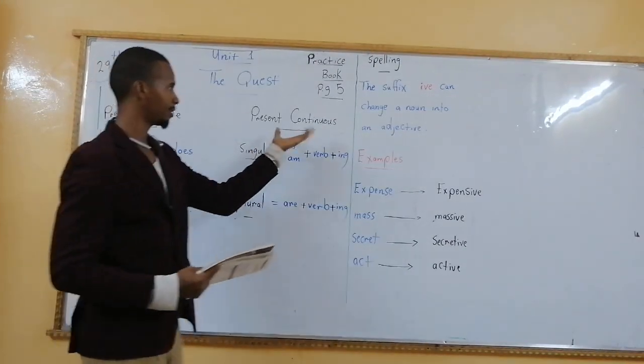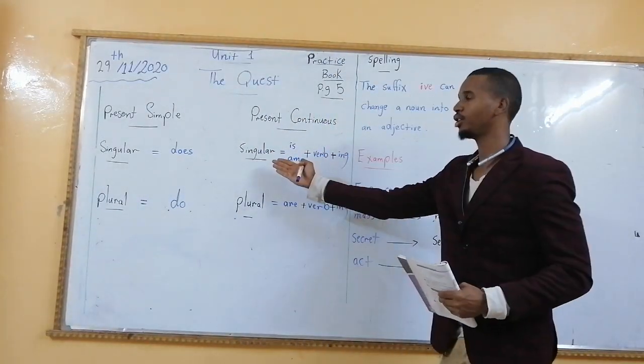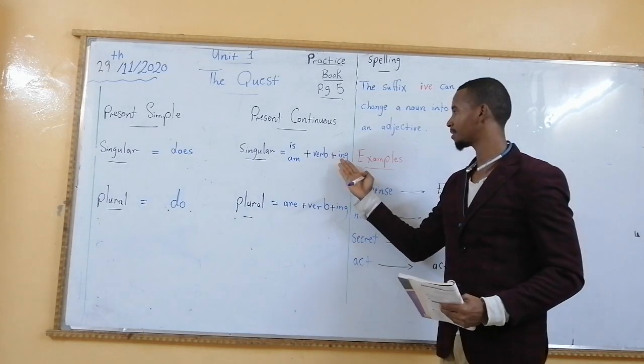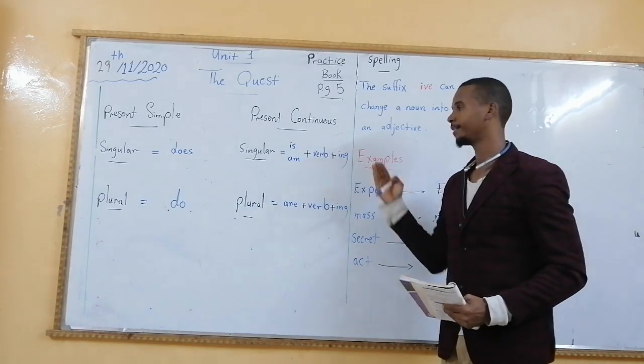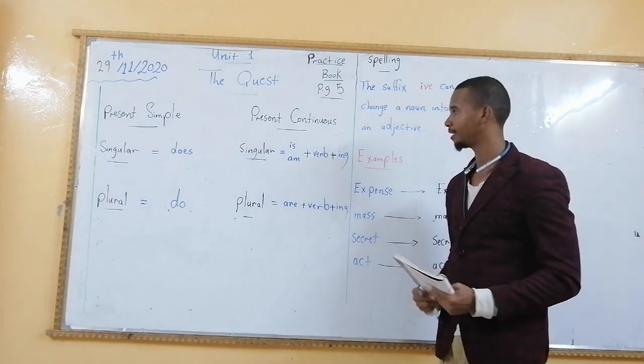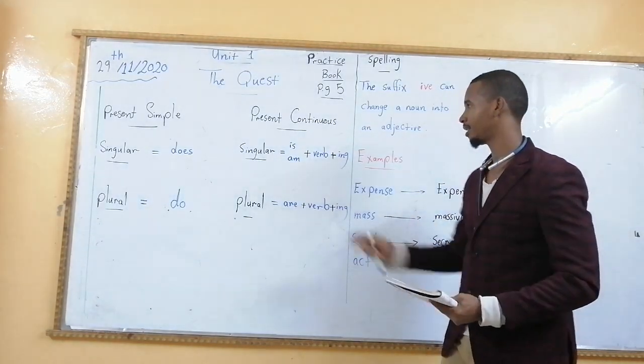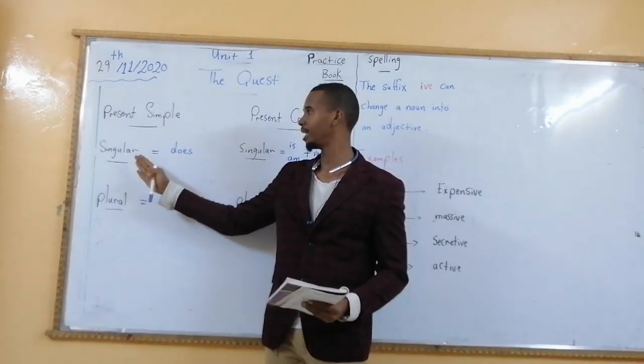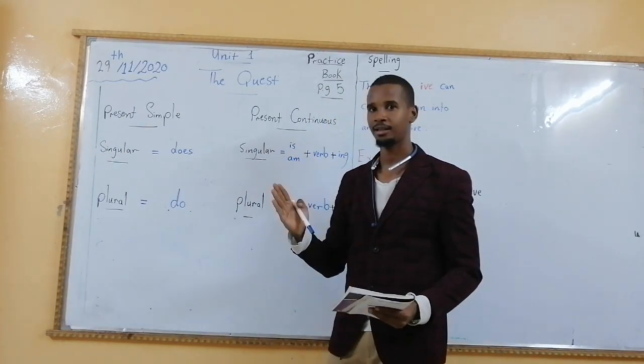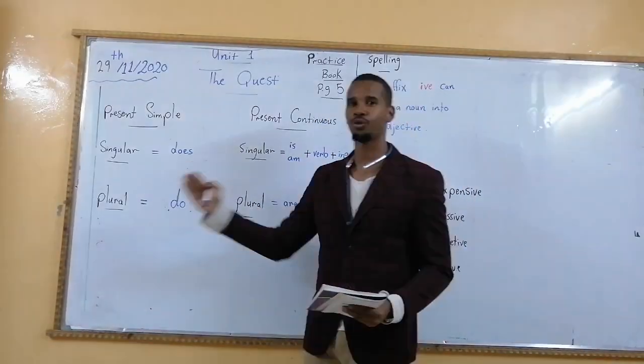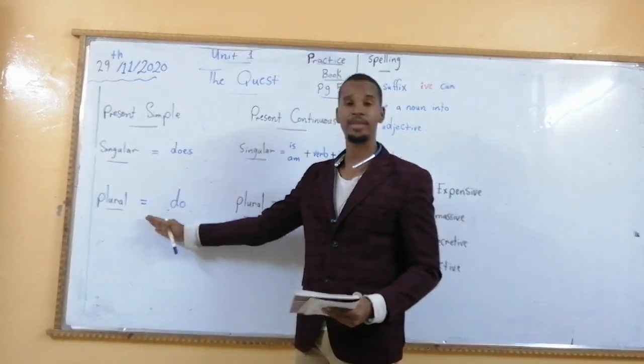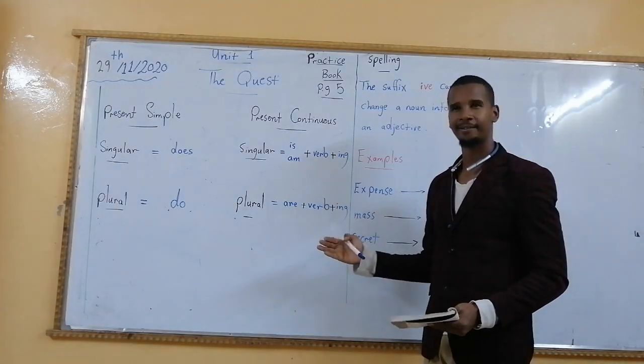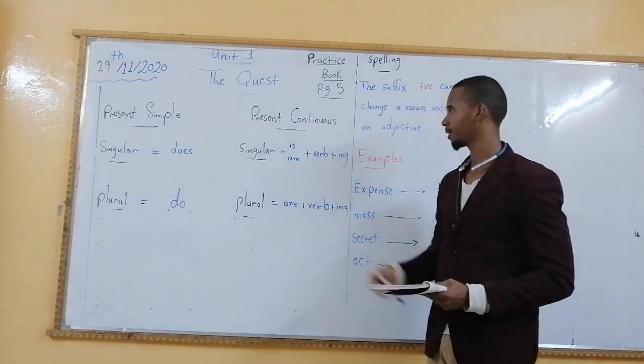The present continuous, however, in the singular you remember that we use is or am plus the verb plus ing. Can we have an example? Yes. He is playing football. Can we have an example here in the present simple? Yes. The singular does. He goes to school, for example. And they go to school, plural. Here, he is playing football. And in the plural, they are, for example, studying now.